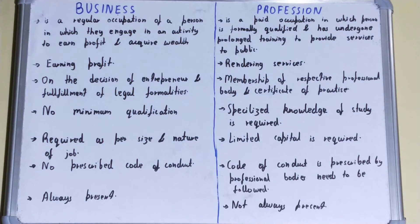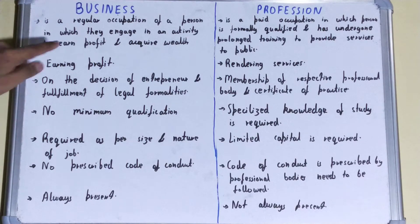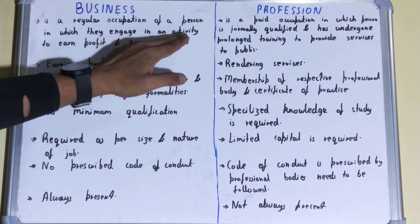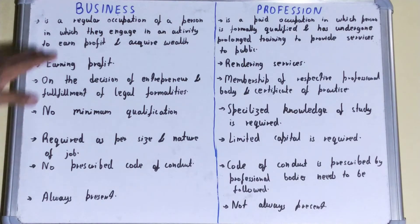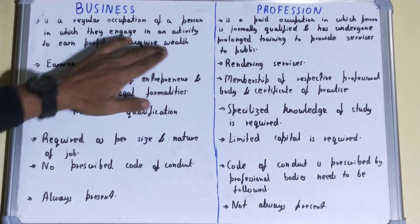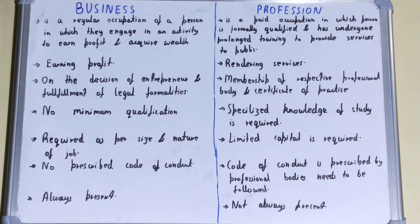In this video we'll be looking at the difference between business and profession. Business is a regular occupation of a person in which they engage in an activity to earn profit and acquire wealth. The person carries out activities such as manufacture of goods, selling or buying of goods, or providing certain services to earn profits.